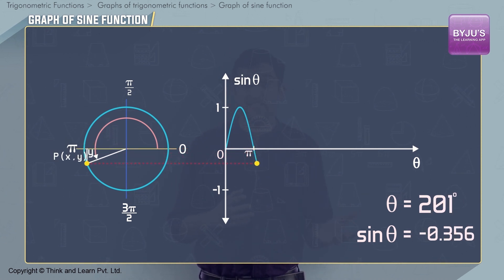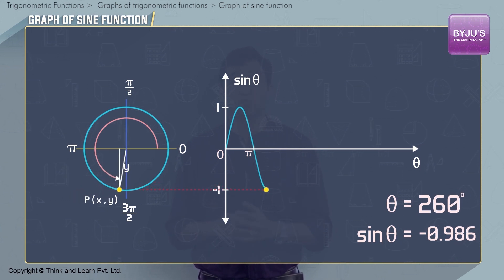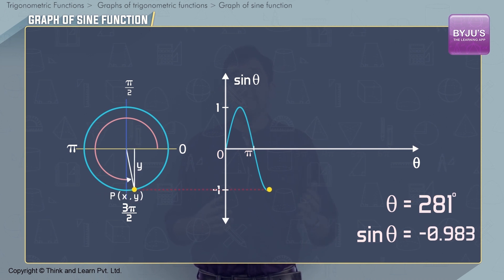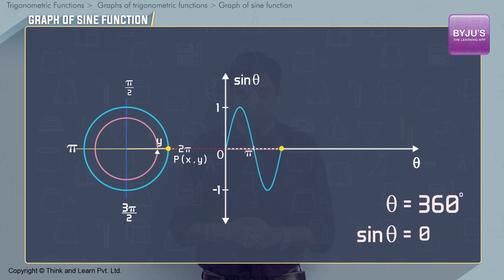As we move to the third quadrant, sin theta becomes negative, and at theta equal to 3π/2, sin theta is -1. Then in the fourth quadrant, theta becomes less and less negative, and at full rotation when theta equals 2π, sin theta is again 0.